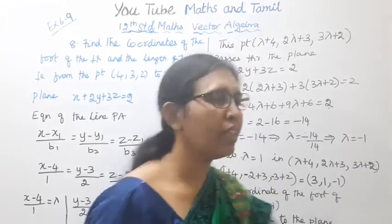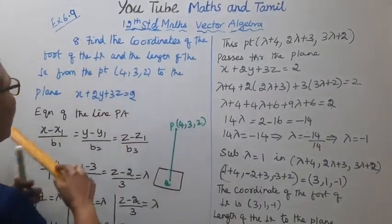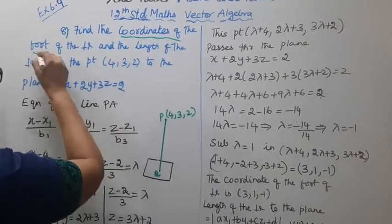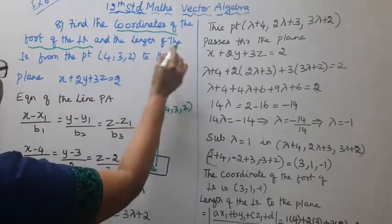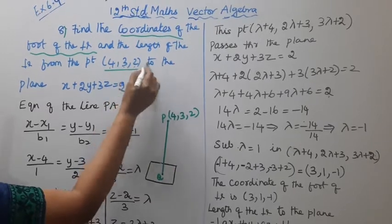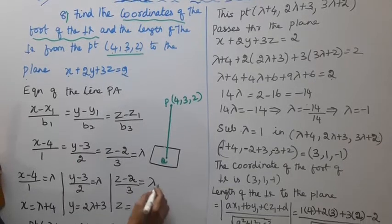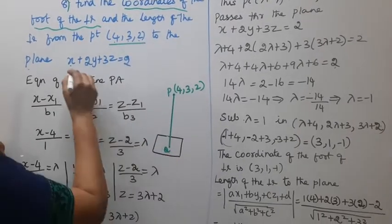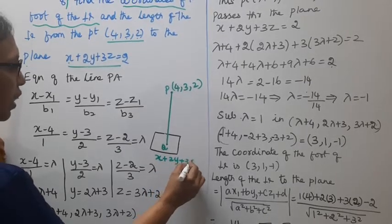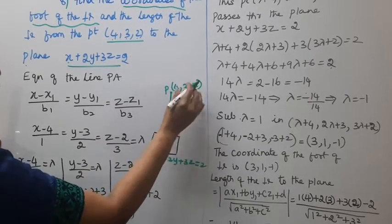Hello students, welcome to Max and Trummel channel. 12th Standard Math, Vector Algebra, Exercise 6.9, 8th sum. Find the coordinates of the foot of the perpendicular and the length of the perpendicular from the point (4, 3, 2) to the plane x + 2y + 3z = 2. The equation of the plane is x + 2y + 3z = 2, and (4, 3, 2) is the given point.